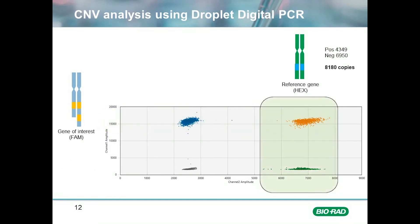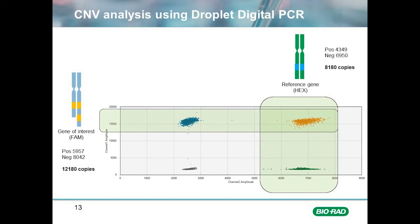If we now look at the droplets on the right side of the plot, these are droplets that had the reference gene amplified within them. Here again, we determine how many are positive and negative, and see that 4,349 were positive and 6,950 were negative. This equates to 8,180 copies of our reference gene per reaction. All of these calculations, of course, are done within the analysis software.